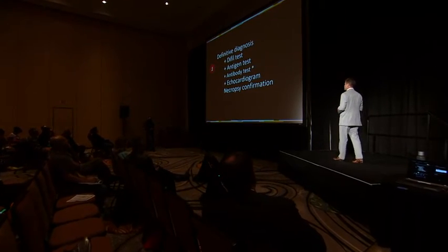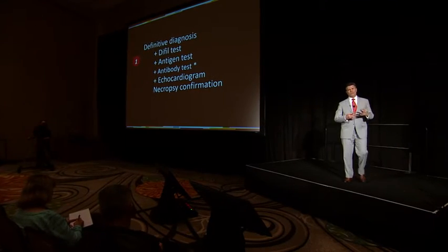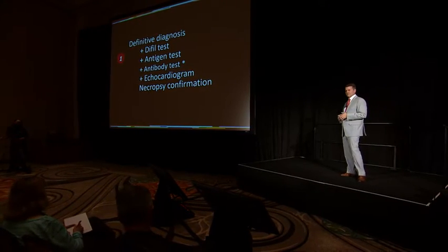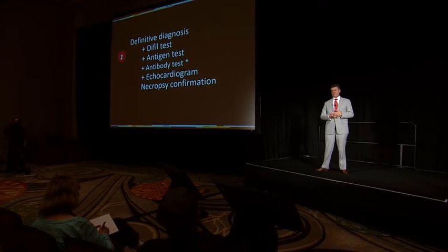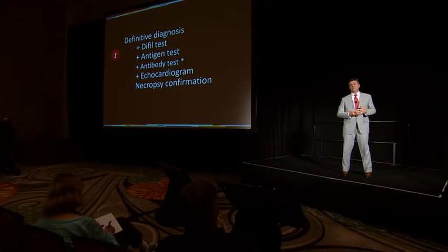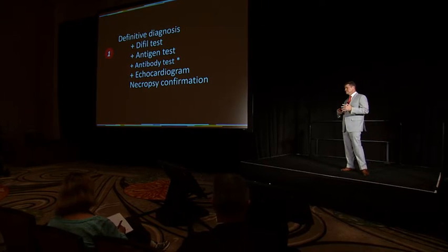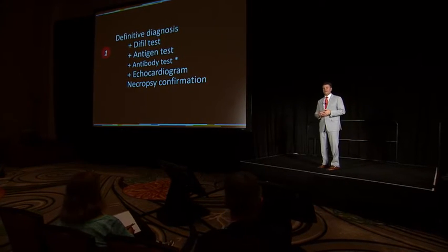When you think about definitive diagnosis of heartworm disease in the cat, what are the diagnostic tests that you think about? Obviously a dye fill test — a positive dye fill test is pretty compelling evidence that that cat has a patent adult heartworm infection. We'll talk about the challenges and limitations with that. Antigen testing — obviously a positive antigen test is pretty definitive evidence that you have an adult infection, with limitations as well.